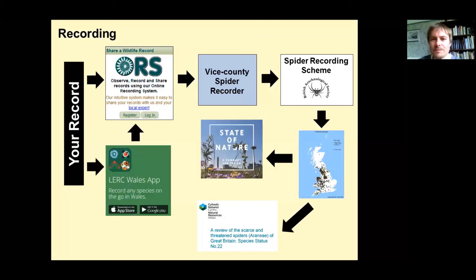We don't just record for recording's sake — it's not like train-spotting. What we want to do is make these records useful. Only when we get nice national datasets can we actually review how rare things are, whether they're restricted to certain habitats, and what the conservation value of a given spider is. This information feeds into national State of Nature reports, where we can say there's been a sudden decline in a species because its habitat has been damaged. That's fundamental to recording, and it's what every recording group is doing — not just spider recorders.